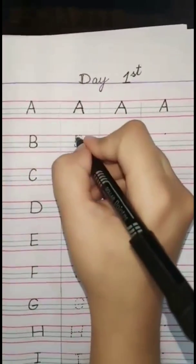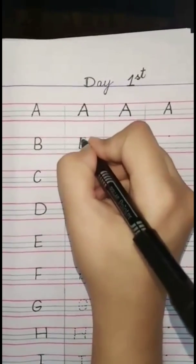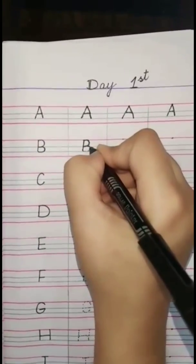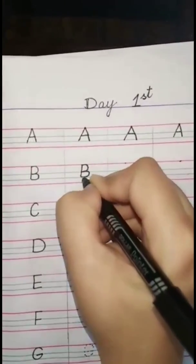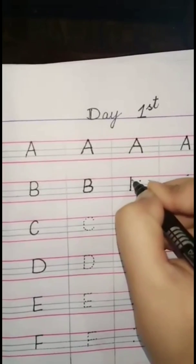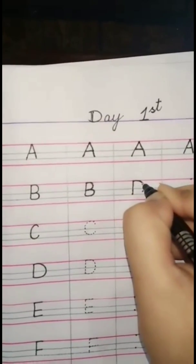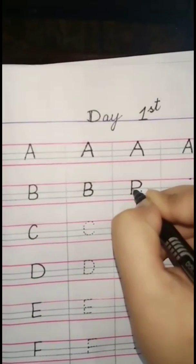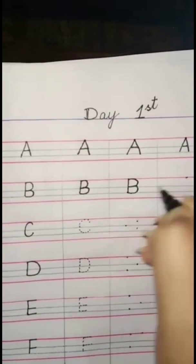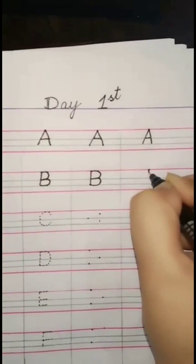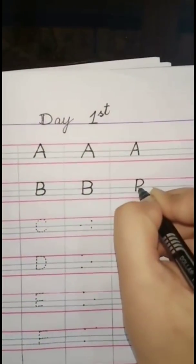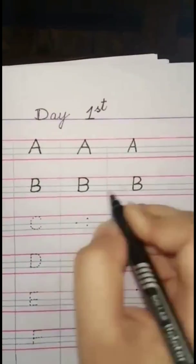Second letter is B. We write B — first step is tracing; complete the tracing. Second step is three dots; we write B on four dots. Now we complete our B in one dot on the first three lines.